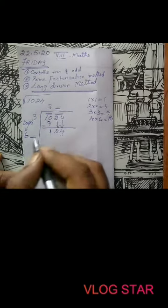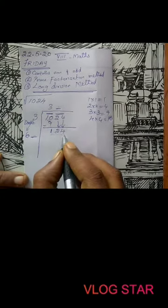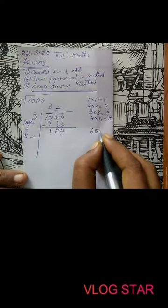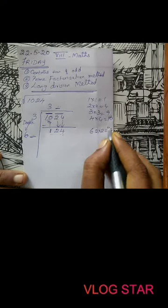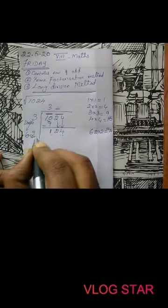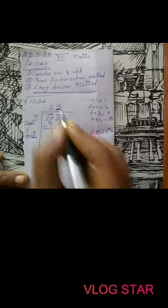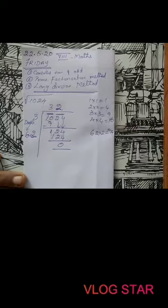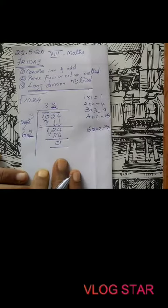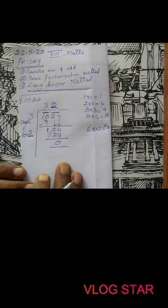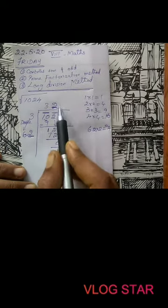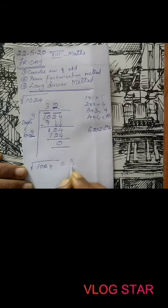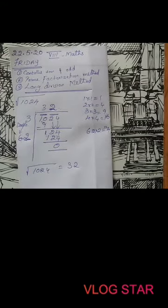They should have the same number. It ends in 4, which means it should end in 2. So 62 × 2 = 124. When I subtract I get remainder 0. I keep doing this long division method until I get remainder 0. Then the quotient is the square root of the given number. So the square root of 1024 is 32.